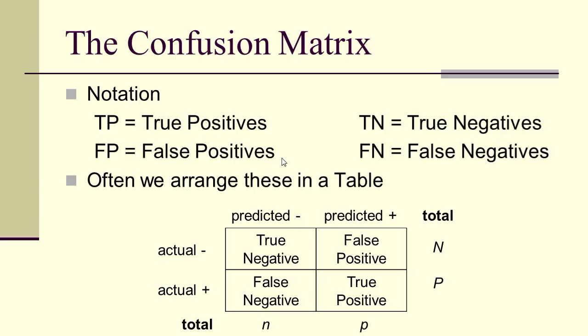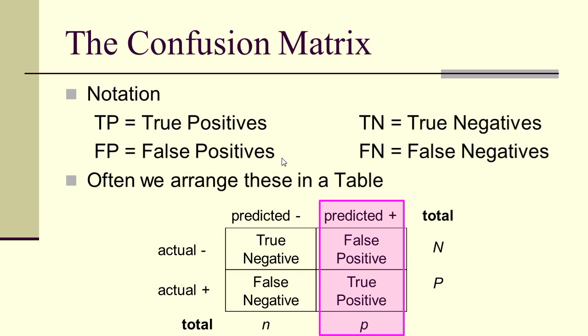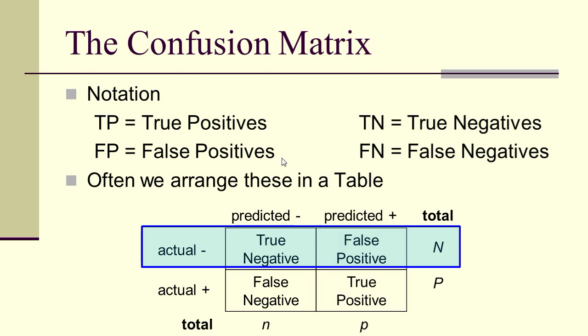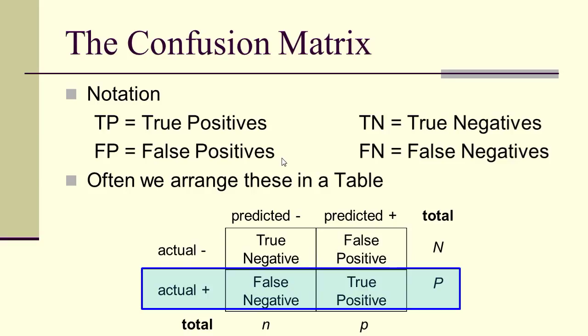Capital TP is the number of true positives, capital TN the number of true negatives, capital FP the number of false positives, and capital FN the number of false negatives. We usually arrange these in a table with predicted positive or negative across the top and actual negative or positive down the side. Adding up along the first column gives lowercase n (number predicted negative), along the second column lowercase p (number predicted positive). The first row adds up to capital N, the second row to capital P.